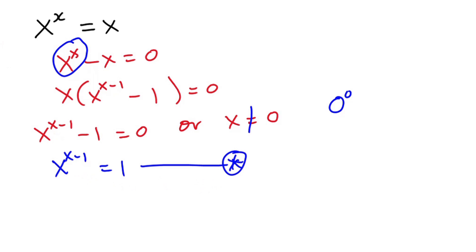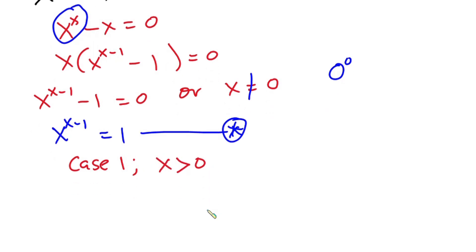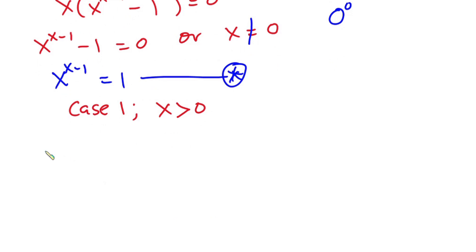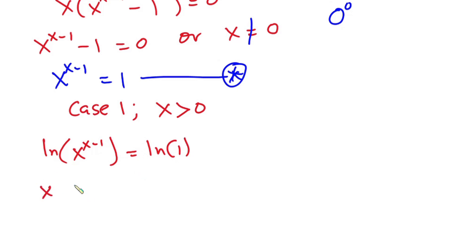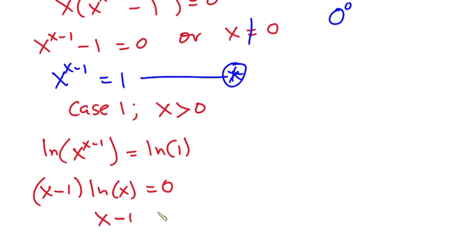From this equation, we'll be considering two cases. Case 1: x is greater than zero. Here I'm going to take natural log on both sides. So we have the natural log of x to the power x minus 1 is equal to natural log of 1. From here, we have x minus 1 times natural log of x is equal to zero, since natural log of 1 is zero. This means either x minus 1 equals zero or natural log of x equals zero.